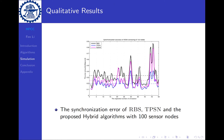Finally, let's look at the results of the synchronization errors. The synchronization error of RBS, TPSN, and the proposed hybrid algorithm with 100 sensor nodes is shown in the figure. As you can see, it drops in the middle of RBS and TPSN, which is definitely acceptable to us.